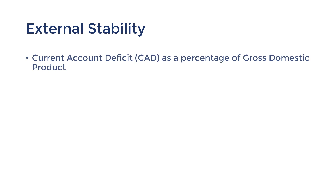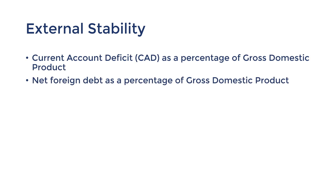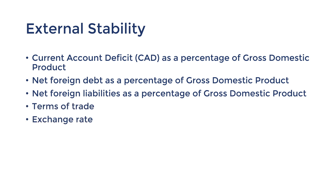The topic of external stability comes up in topic 3 of the syllabus. The indicators of external stability include the CAD as a percentage of GDP, net foreign debt and net foreign liabilities as a percentage of GDP, terms of trade, the exchange rate, and international competitiveness. For each of these topics I gave an overview of their trends as well as the causes and effects, and some tips about how to write about external stability in exams.